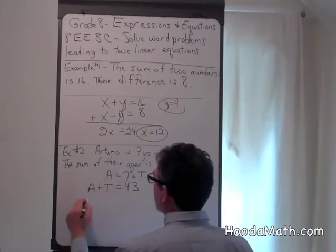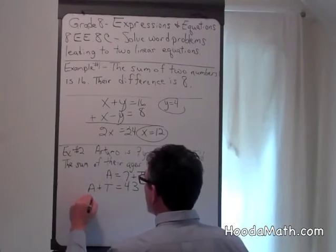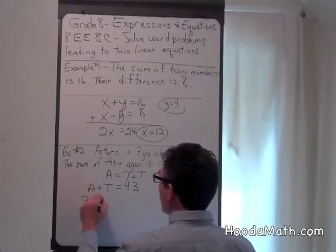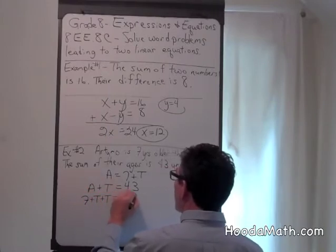I'm going to rewrite this equation. 7 plus t, for a, plus t equals 43.